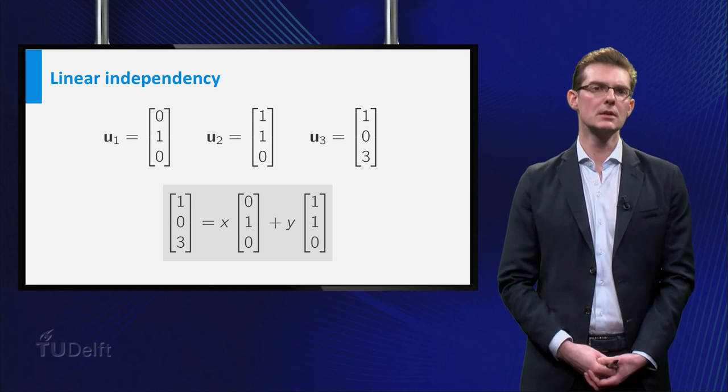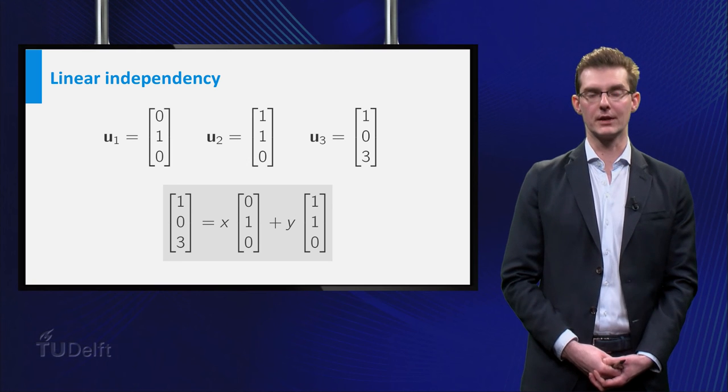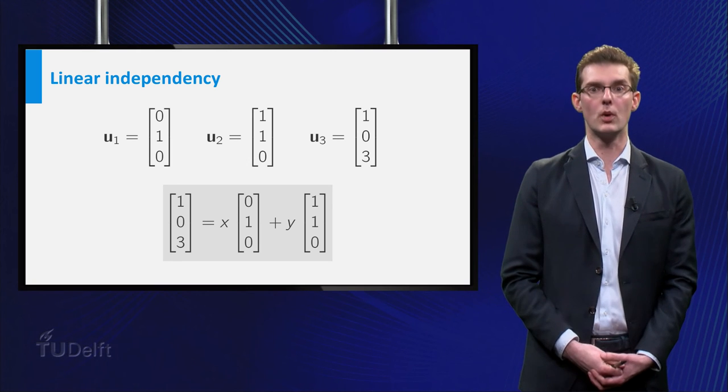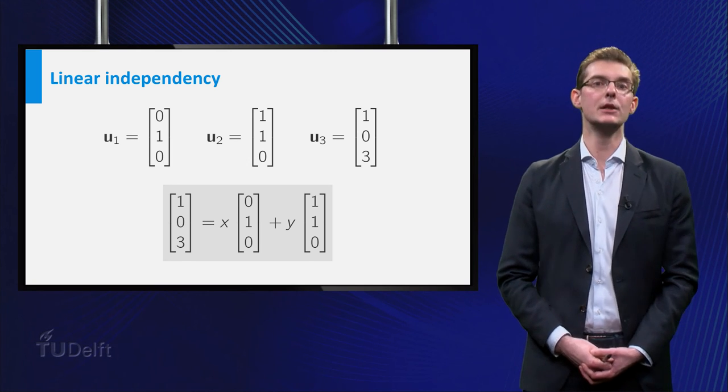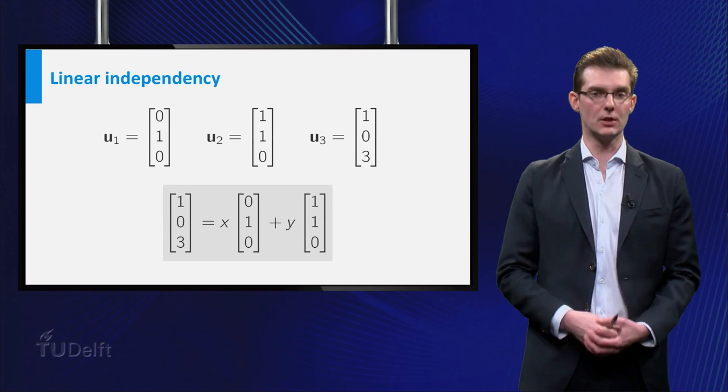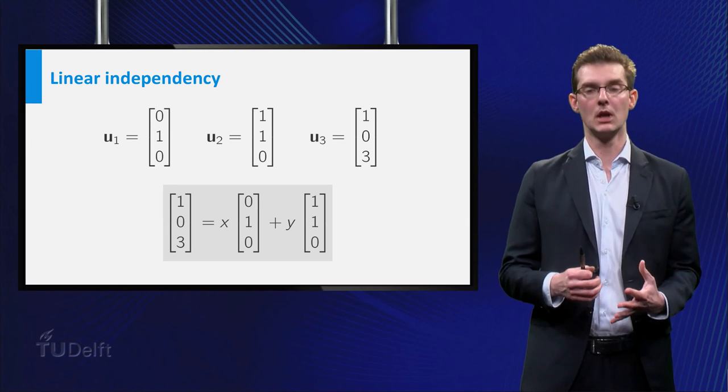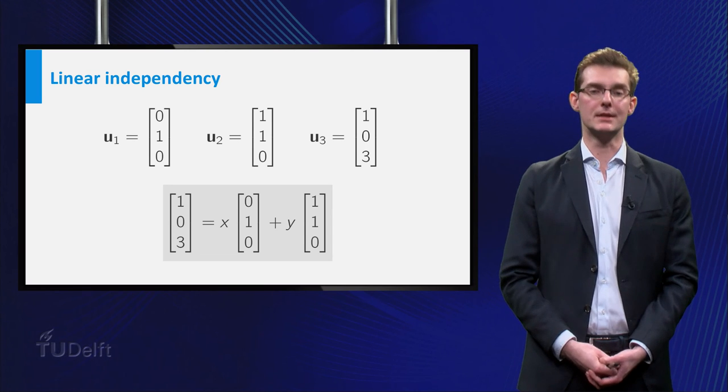Here it is easy to see that U3 can never be a linear combination of the first vectors. Since the third coordinate of both U1 and U2 is 0, any linear combination of those vectors will have a third coordinate that is equal to 0. And that's a problem, because the third coordinate of U3 is equal to 3.